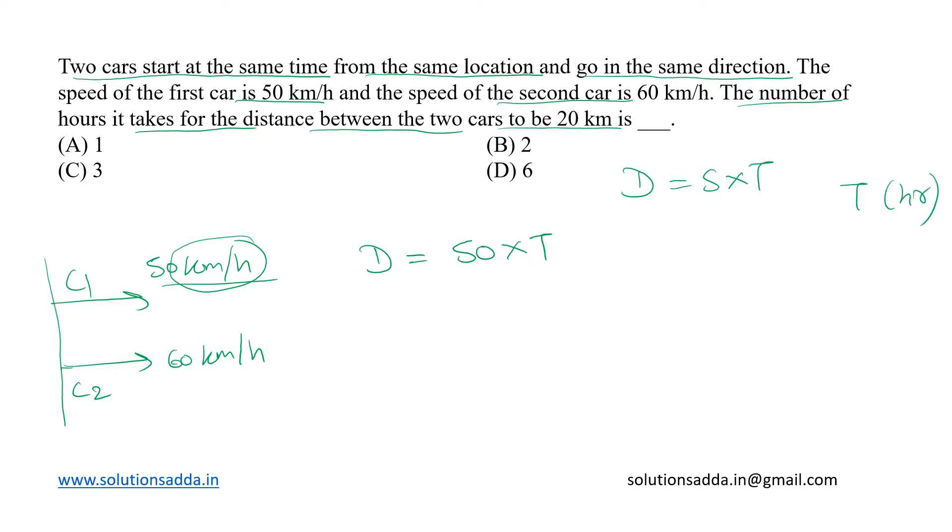Similarly for car C2, the distance covered will be 60 into T kilometers. We want the distance between them to be 20 kilometers. Definitely car 2 will be ahead of car 1 since its speed is higher, so we shall do 60T minus 50T, which is the distance between them at time T, and that should be equal to 20 kilometers.